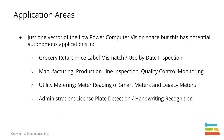Now let's take a closer look. Digit recognition is just one vector of the low-power computer vision space but has potential autonomous applications in grocery retail, price label mismatch used by data inspection, manufacturing for product line inspection and quality control monitoring, utility metering, meter reading of smart meters and legacy meters, as well as administration for license plate detection and handwriting recognition.